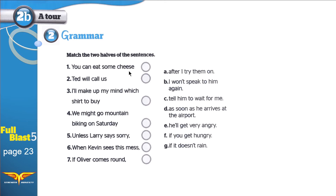You can eat some cheese — after I try them on. When you try something on, that has something to do with clothes, like buying new pajamas — you try them on for clothes, not for food. He's telling you to eat some cheese. Item: I won't speak to him again. Tell him to wait for me. As soon as he arrives at the airport — he'll get very angry. If you get hungry, you eat cheese — that makes sense. Ted will call us once he arrives at the airport. As soon as means once — the minute he gets to the airport, he will make that call.